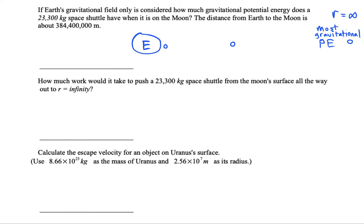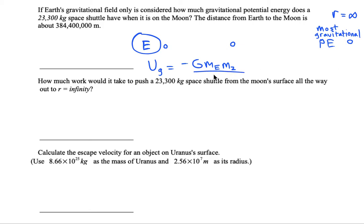What is the formula that gives us numbers for gravitational potential energy? The formula is Ug equals negative G times the mass of Earth times the mass of the object in the space around Earth, which I'll call m2, divided by r, the distance between them.